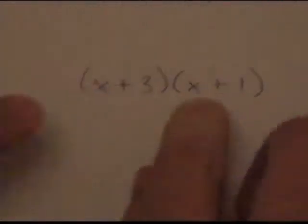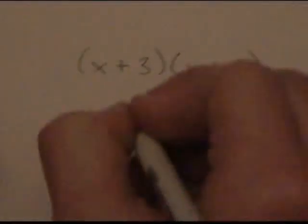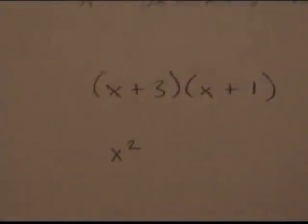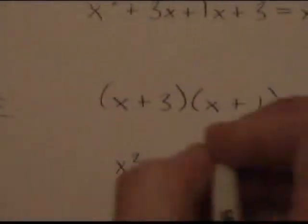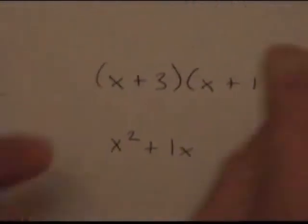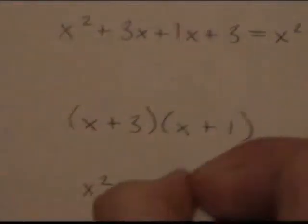First you multiply together the first two terms, the F in FOIL, and you get x squared. Then you multiply the outer two, the O in FOIL, and you get 1x. Then you multiply the inner two, the I in FOIL, and you get 3x.